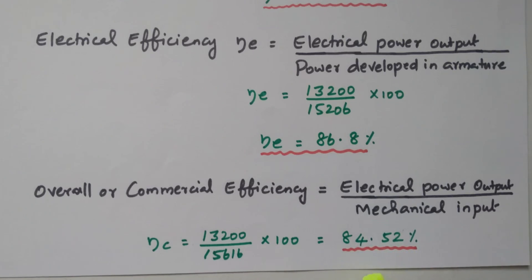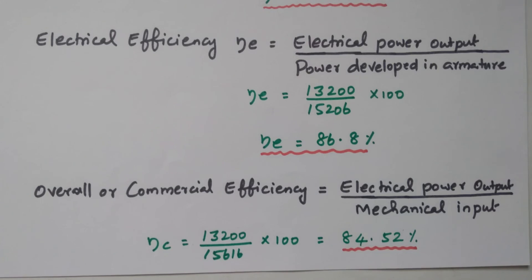In this problem we discussed the shunt generator, for which we calculated the copper loss — armature copper loss — followed by efficiency: mechanical efficiency, electrical efficiency, and overall efficiency. Subscribe the channel for more videos. The soft copy of this material is available in the drive link given in the description box. Thank you for listening.